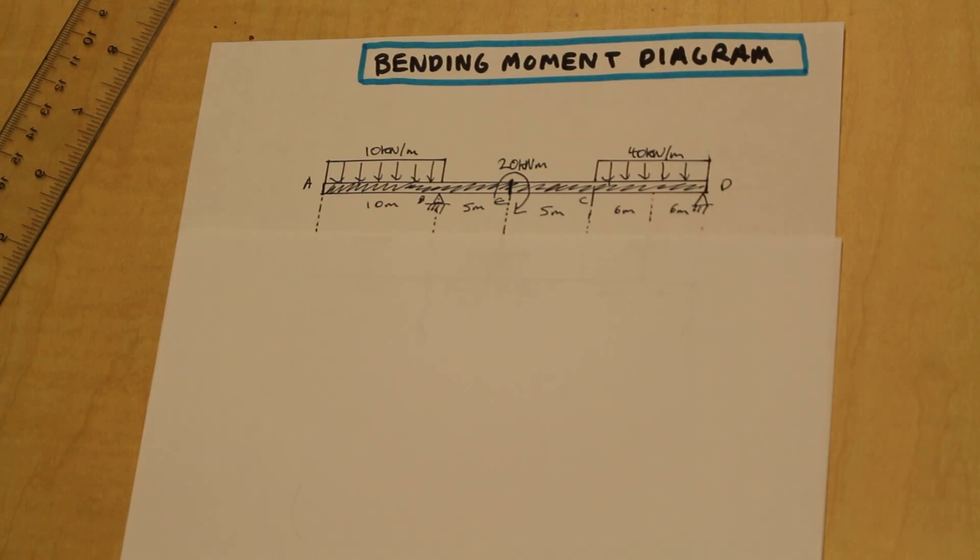If you'll remember from our Strengths 1 material, we already went over this. We went over calculating reactions and the method of cutting the beam in different sections to solve for the internal forces in the beam. We're not going to do that now.